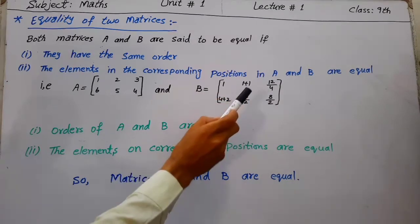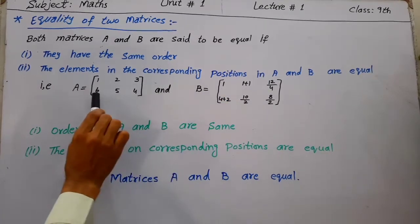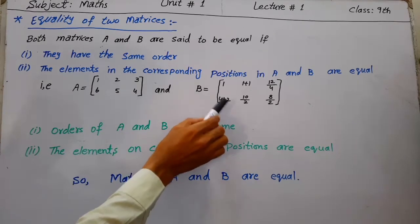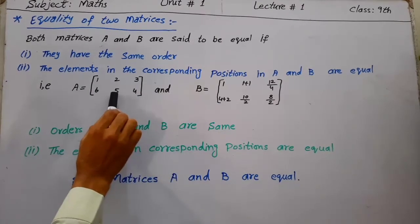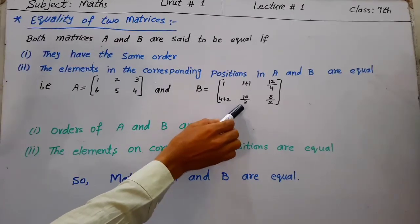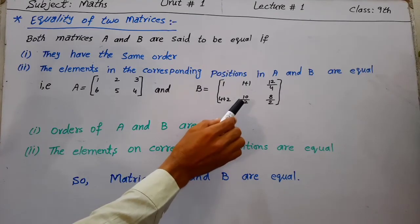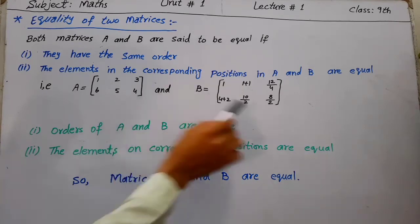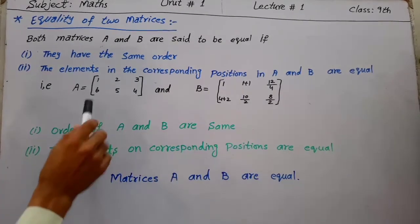Continuing: one has 6 and the other has 4+2 which equals 6; one has 5 and the other has 10/2 which equals 5; one has 4 and the other has 8/2 which equals 4.